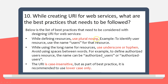While using a long name for resources, use underscore or hyphen — avoid using spaces between words. For example, to define an 'authorized users' resource, the name can be 'authorized_users' or 'authorized-users'. The second rule is: you should avoid using spaces between words.